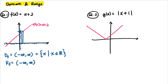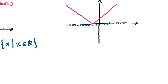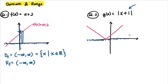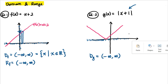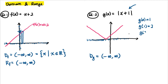Now, what if we have g(x) = |x + 1|? We can substitute any number into this function — there is no restriction. So the domain of g is from negative infinity to infinity. For the range: g(0)=1, g(1)=2, g(2)=3, g(-1)=0, and g(-2)=|-1|=1.